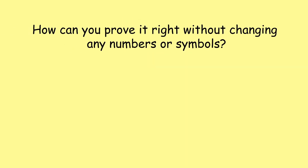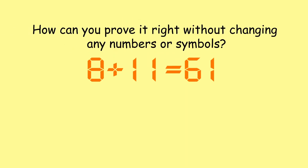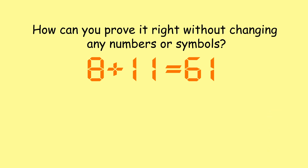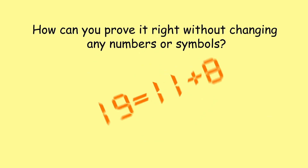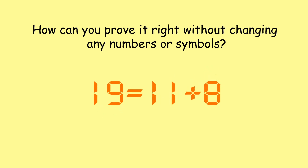How can you prove 8 plus 11 is equal to 19 without changing any numbers or symbols? You have just 10 seconds to answer. Now, if you flip the equation upside down, it becomes 19 is equal to 11 plus 8. There you have it.